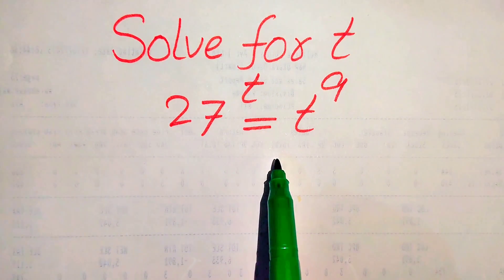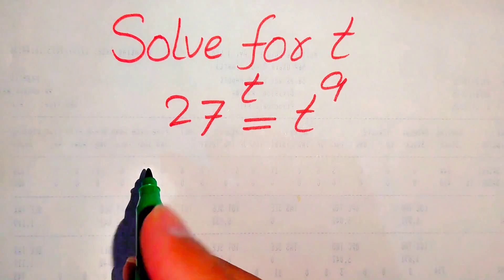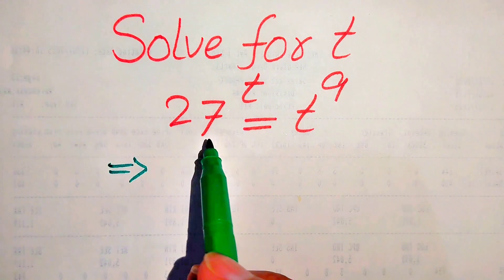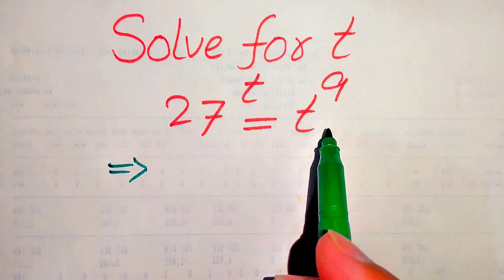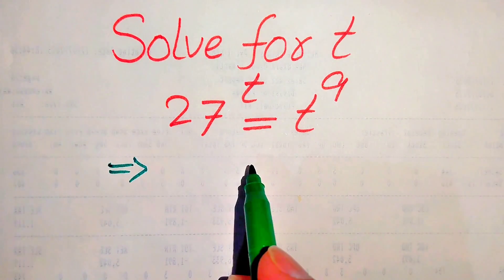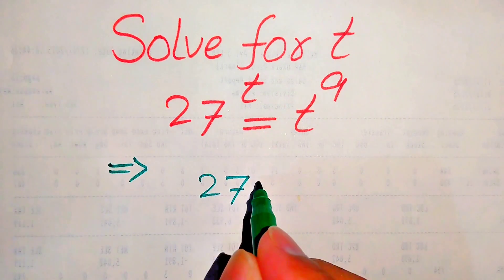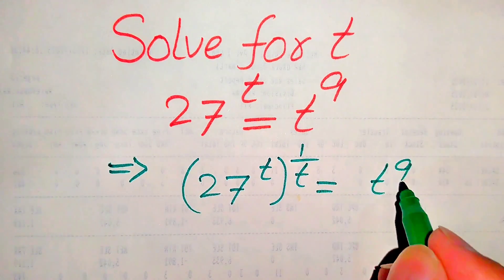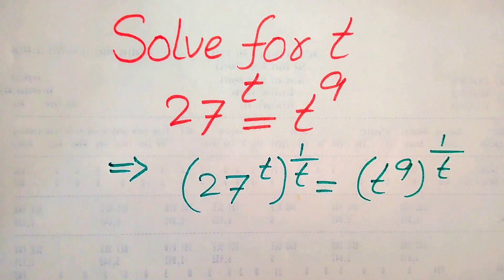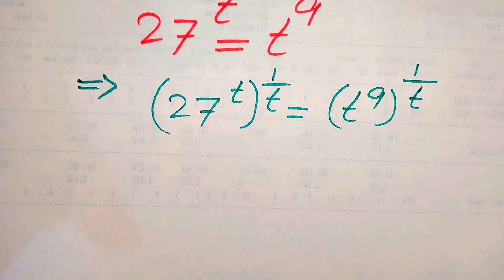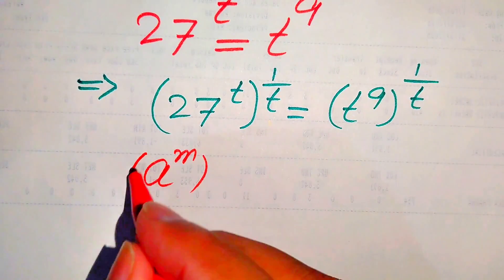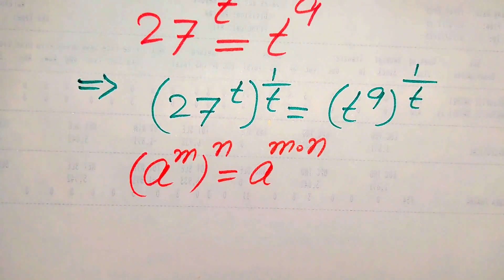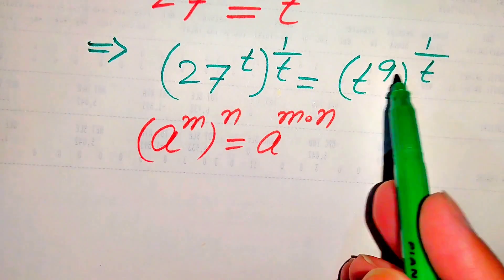Here we need to do some working. The very first step we are going to do is move our variable terms to the right hand side and move all the constant terms to the left hand side. For this we need to take the t-th root on both sides — in other words, we will take 1 over t power on both sides. We use the exponent law: a to the power of m, to the power of n, equals a to the power of m multiplied by n.